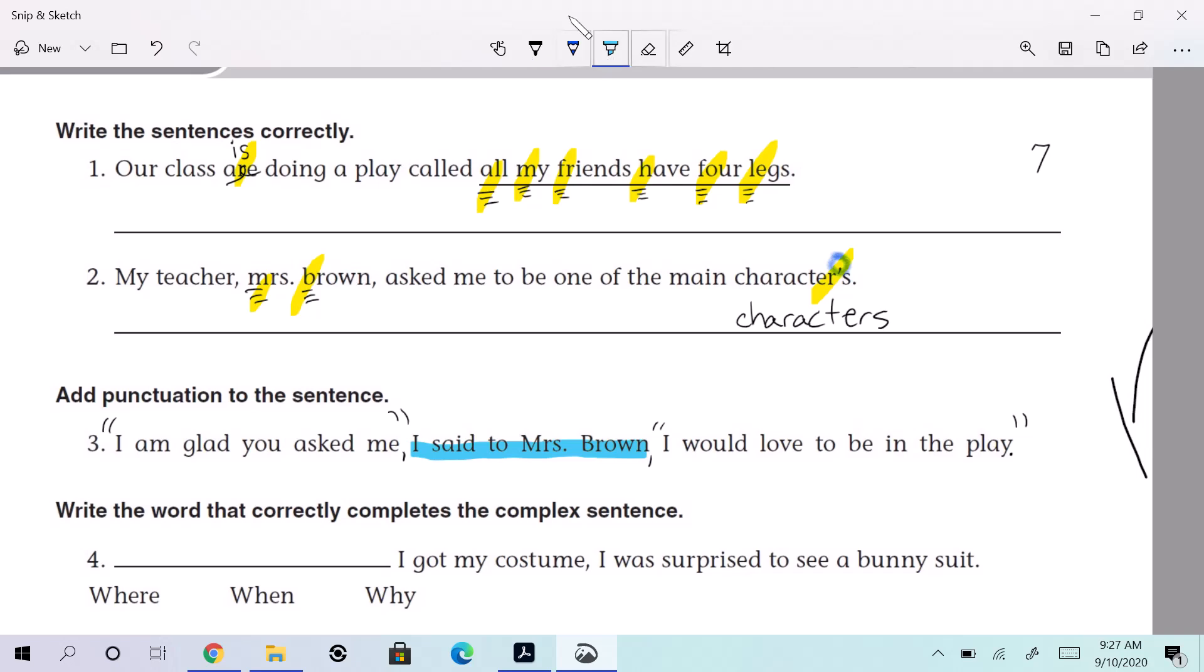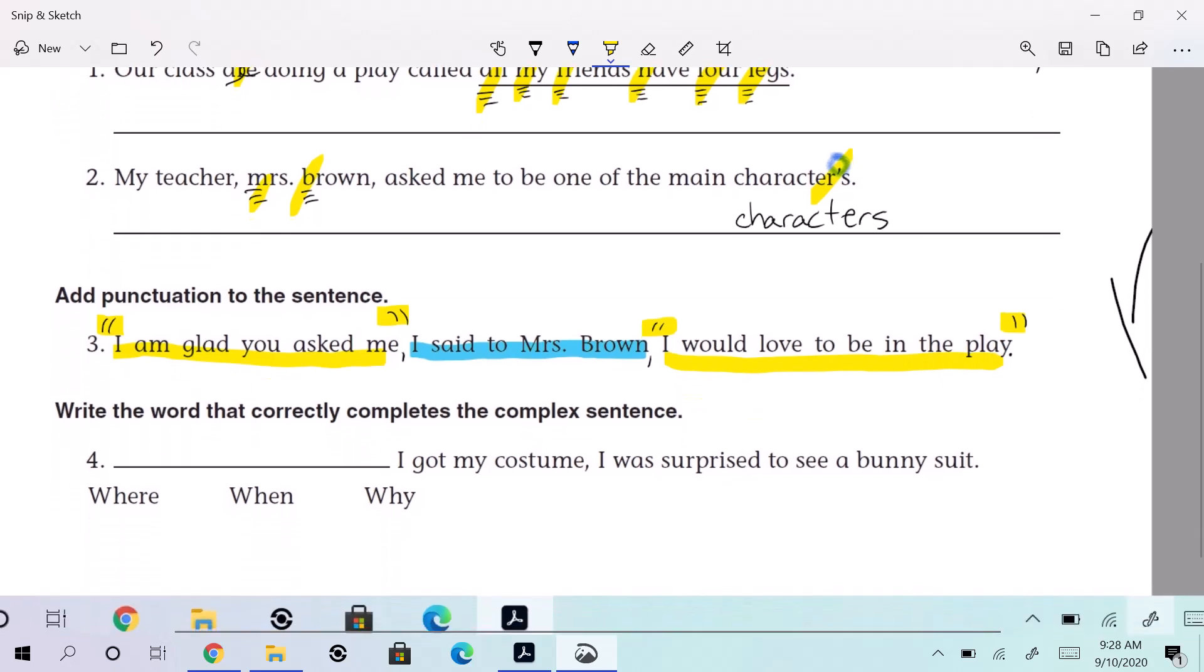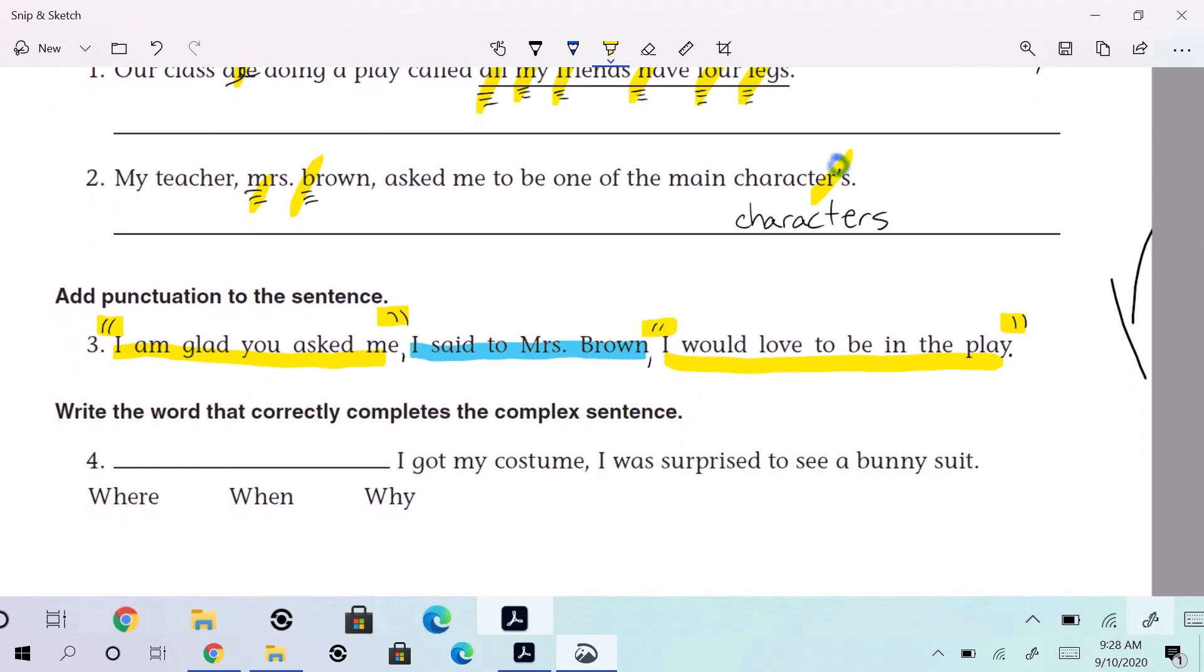So the speaking parts, you guys get quotation marks around them. These parts of the sentence are being spoken by someone, right? All right. And who are they being spoken by? I said to Mrs. Brown, I am saying, right? I am glad you asked me, comma, I said to Mrs. Brown, comma, I would love to be in the play. Is that good? All right. That's a lot going on there. But we're going to teach you this year how to do all that stuff.